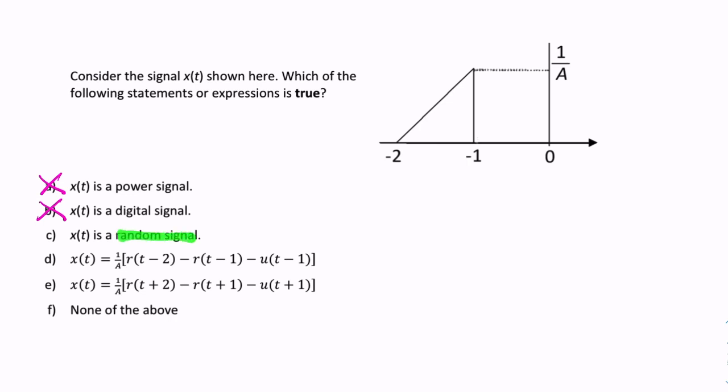So, is it a random signal? A random signal is the opposite of a deterministic signal, and a deterministic signal is a signal that we can represent mathematically. Is there a mathematical expression that will represent this? It looks like it. We can probably represent it with some unit steps and unit ramps. So, no, it isn't a random signal.